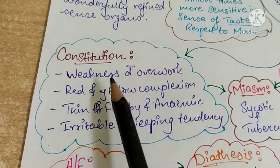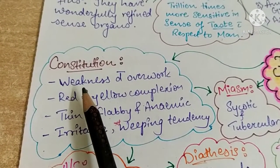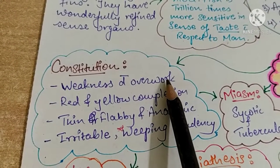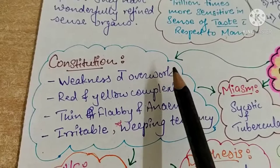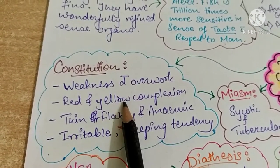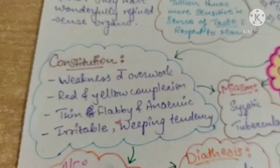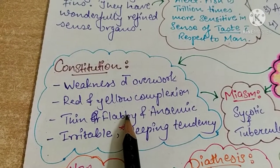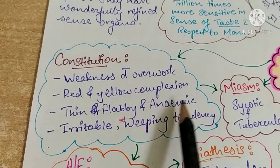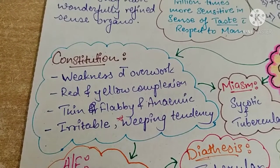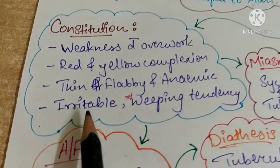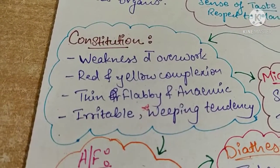These remedies are well suited to people who have weakness due to overwork — very weak or tired persons. They have a red and yellow complexion. They are thin or flabby persons with an anemic look on their face. These remedies are especially suited to females.